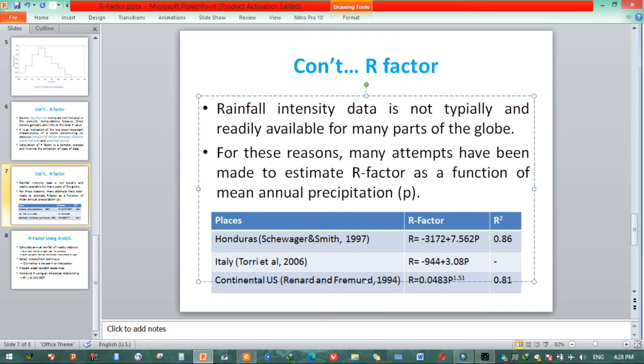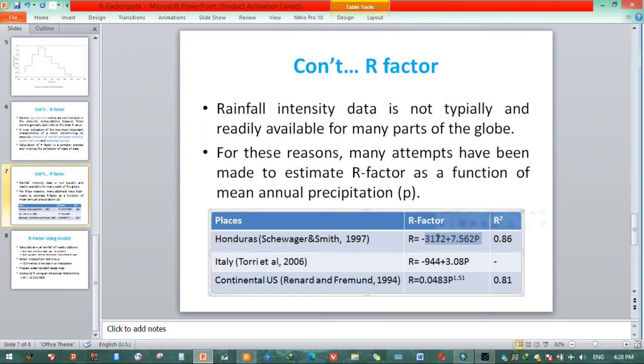In Honduras, Stuhwager and Smith in 1997 correlate R factor with mean annual precipitation using this equation, with statistical R square value of 0.86. This equation will be used to determine R factor in Honduras.